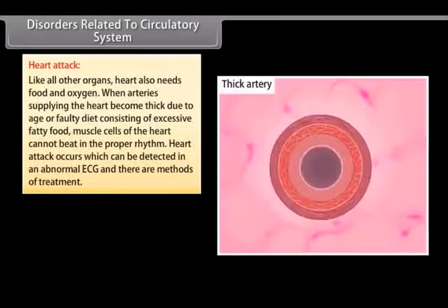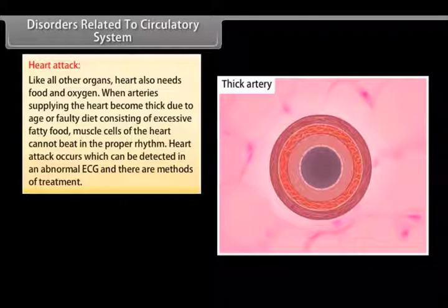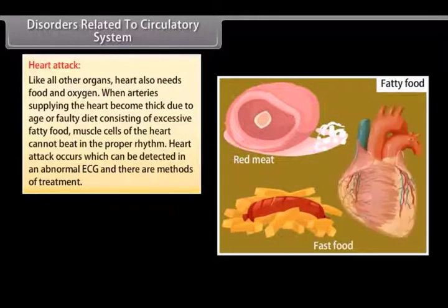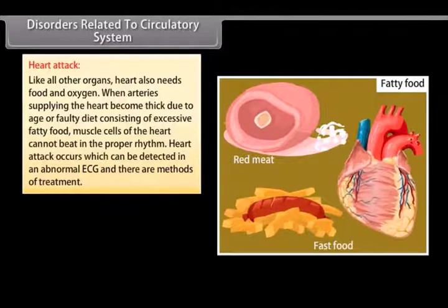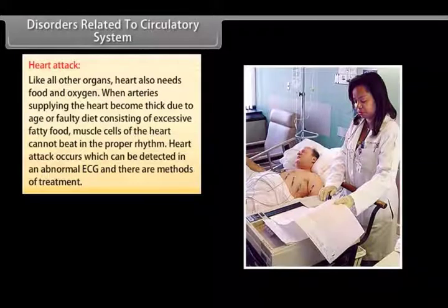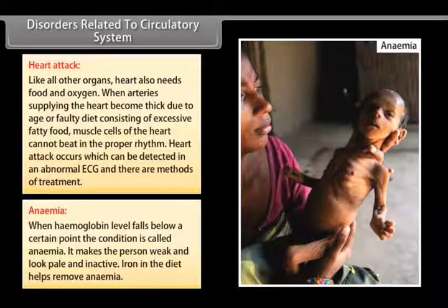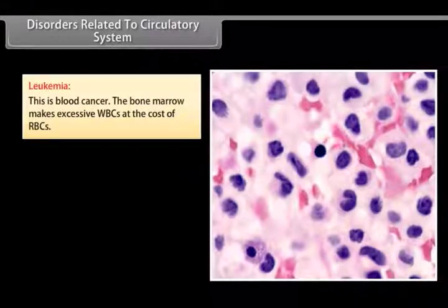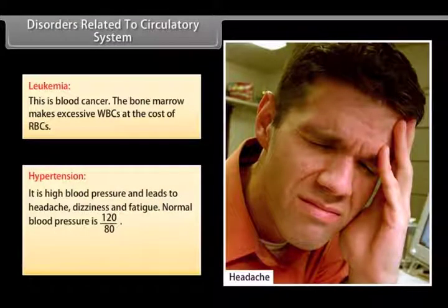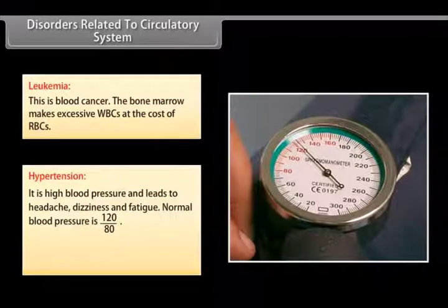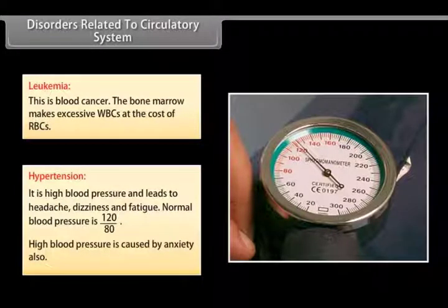Disorders related to circulatory system. Heart attack: Like all other organs, heart also needs food and oxygen. When arteries supplying the heart become thick due to age or faulty diet consisting of excessive fatty food, muscle cells of the heart cannot beat in the proper rhythm. Heart attack occurs which can be detected in an abnormal ECG and there are methods of treatment. Anemia: When hemoglobin level falls below a certain point, the condition is called anemia. It makes the person weak and look pale and inactive. Iron in the diet helps remove anemia. Leukemia: This is blood cancer. The bone marrow makes excessive WBCs at the cost of RBCs. Hypertension: It is high blood pressure and leads to headache, dizziness and fatigue. Normal blood pressure is 120 upon 80. High blood pressure is caused by anxiety also.